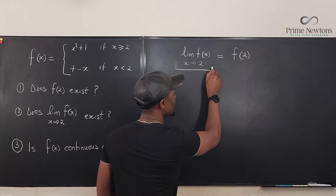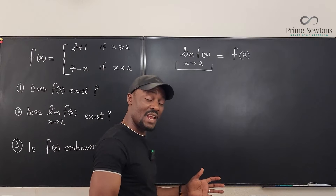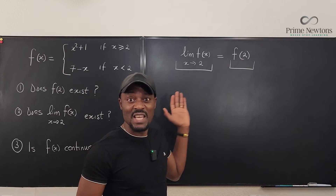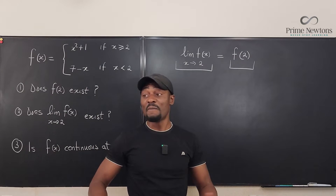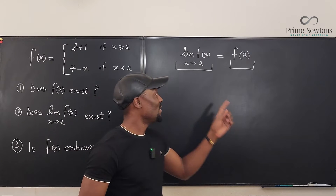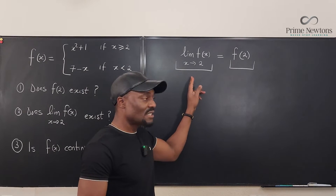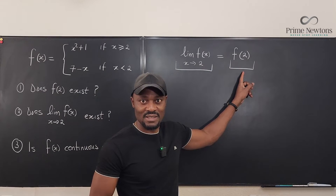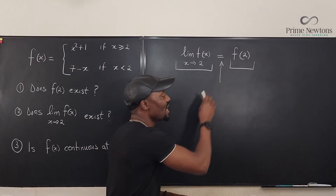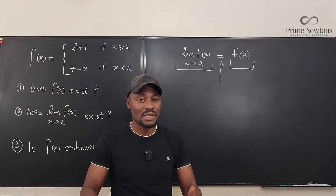The first thing that must happen is this: the left-hand side and the right-hand side must exist for the equation to make any sense. This is the continuity equation — just as you have Einstein's E = mc², this is your E = mc² for continuity of a function at a given point. So the limit must exist, the function value must exist, and both must be equal. All three must exist. If one does not exist, the function is not continuous at that point.